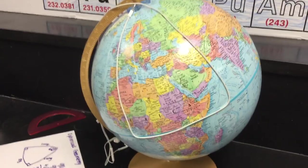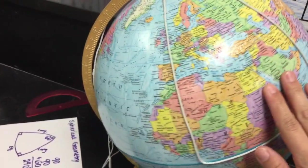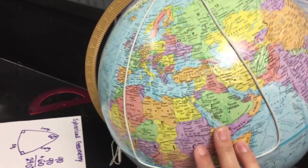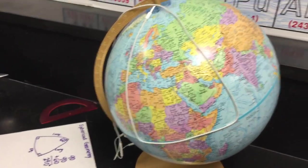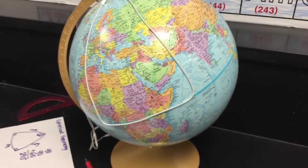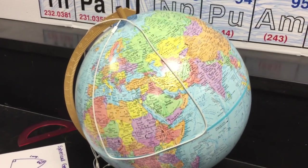And you can also see this whenever you're looking at the flight patterns whenever you're traveling the globe. I hope that was a helpful representation to understand the difference between spherical and Euclidean geometry.